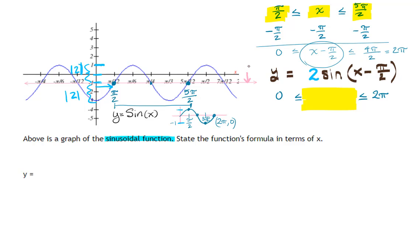So the whole function has been shifted down from the x-axis y equals zero one unit, and so I have to subtract one at the end. This is my new function right here: y equals two sine of x minus pi over two minus one. This is what I would enter in Desmos to double check that it works, and if it works then I would enter it into the homework system.